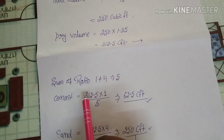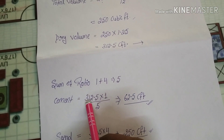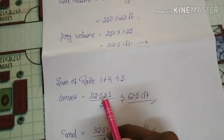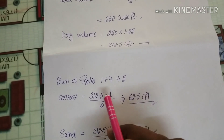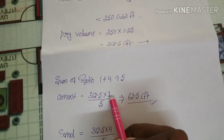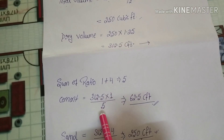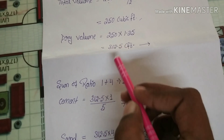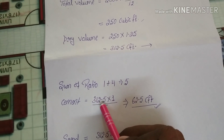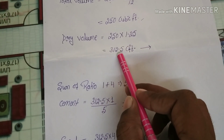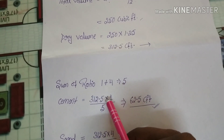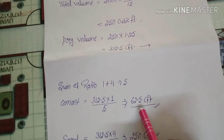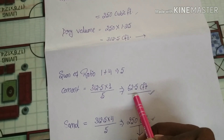To find the cement quantity, take the dry volume 312.5 and multiply by the cement proportion, then divide by the total sum of ratio. So 312.5 multiplied by 1, divided by 5, gives us 62.5 cubic feet. That is our cement quantity requirement.